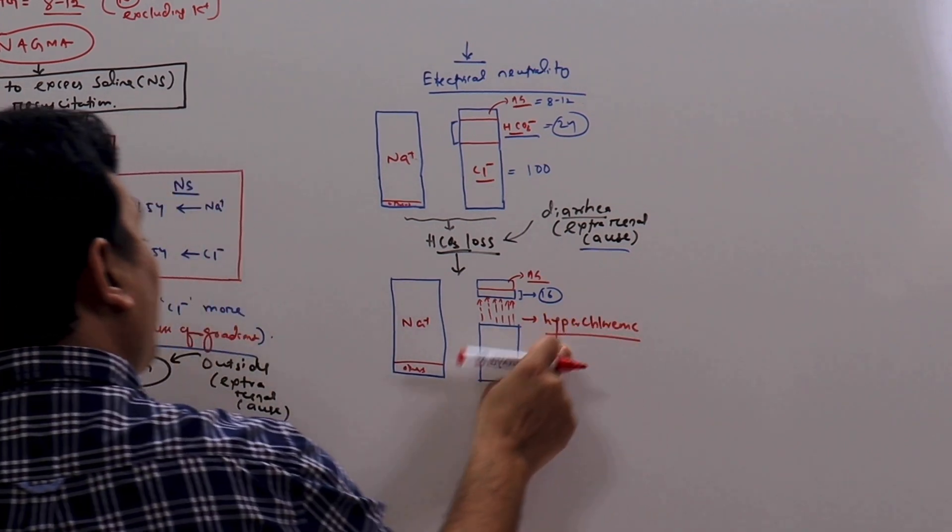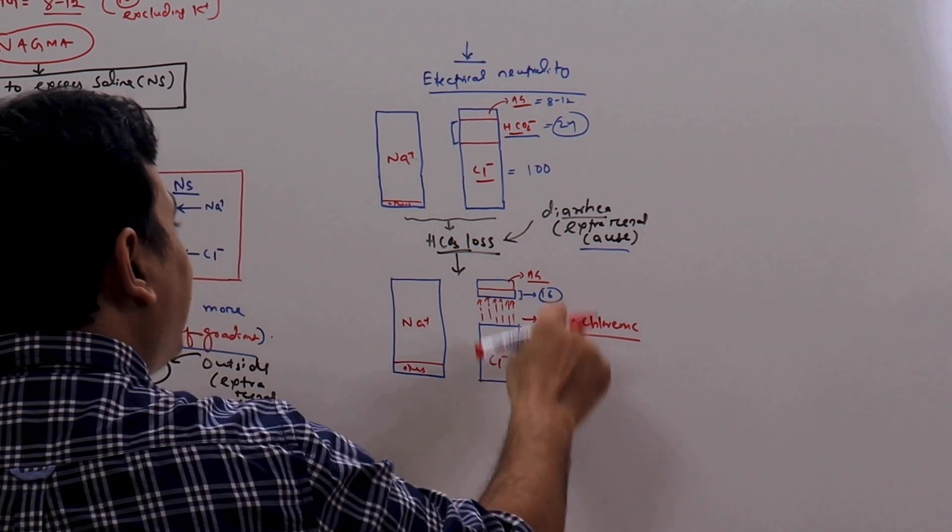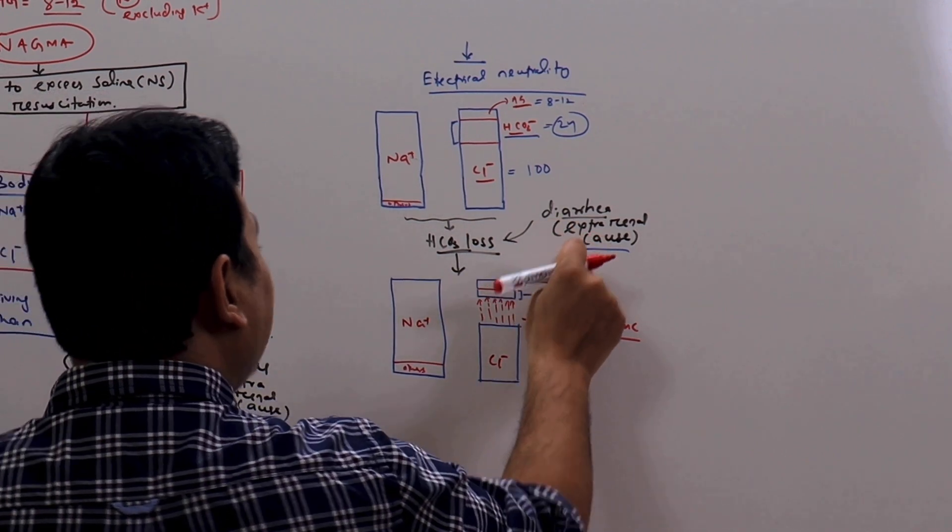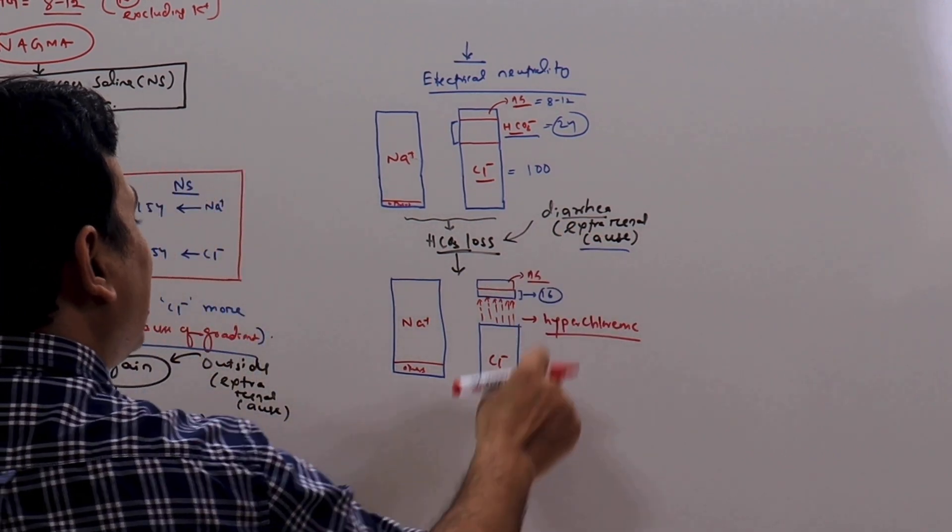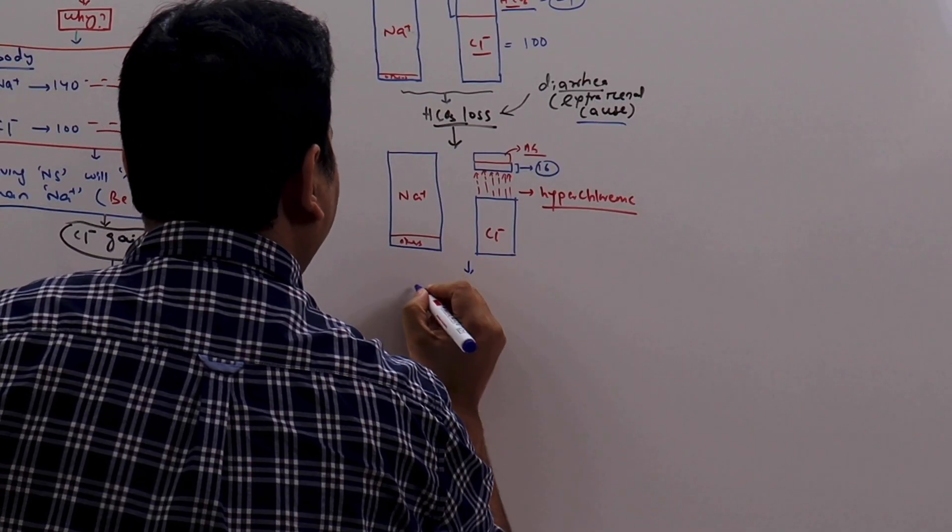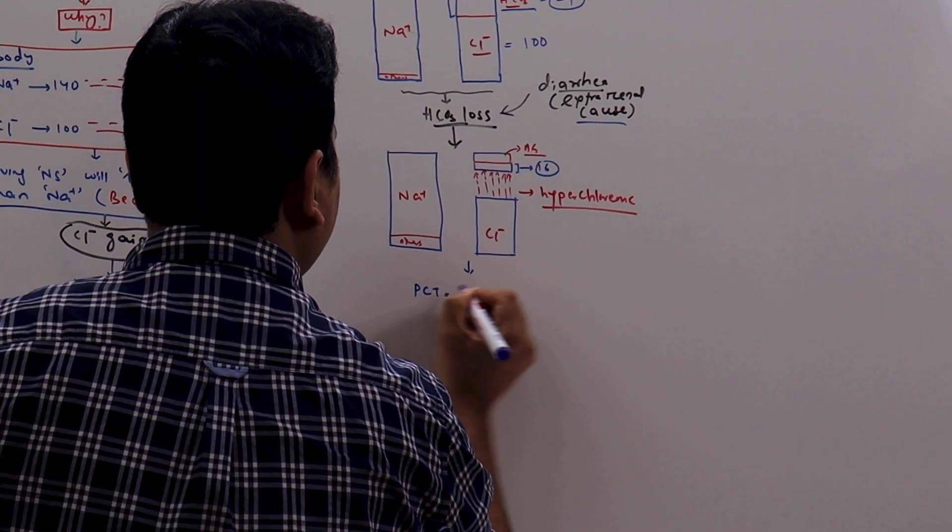Here, we have not provided normal saline from the outside. But this is because the patient has diarrhea. To maintain the electrical neutrality, the chloride increases. But how? Concept is same. Again, in the proximal convoluted tubule, we have the transporter for chloride and bicarbonate.